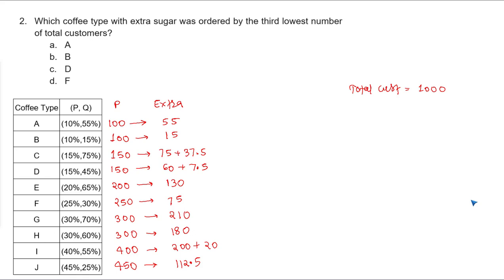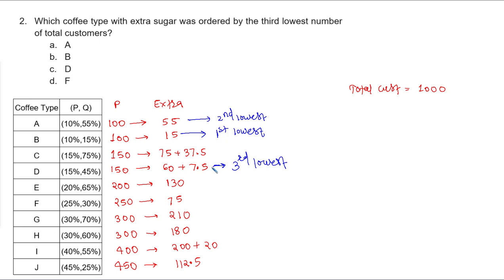Question number two: which coffee type with extra sugar was ordered by the third lowest number of total customers? Looking at our values with 1000 total customers: the first lowest is coffee type B with 15, the second lowest is coffee type A with 55, and the third lowest is coffee type D. So the answer is option C, that is coffee type D.